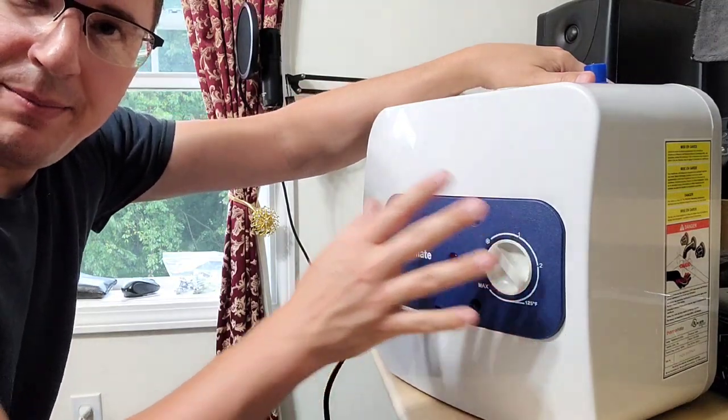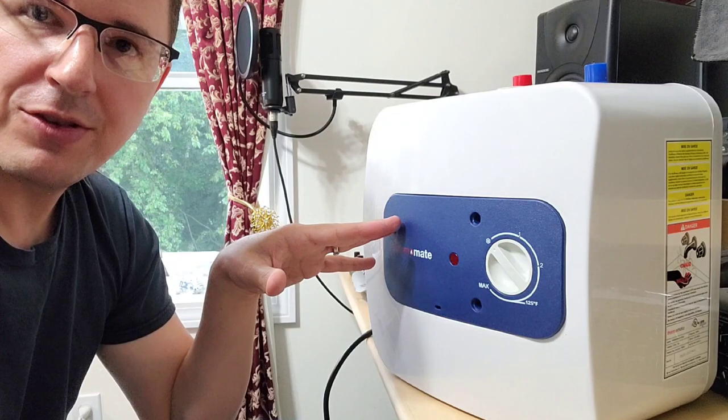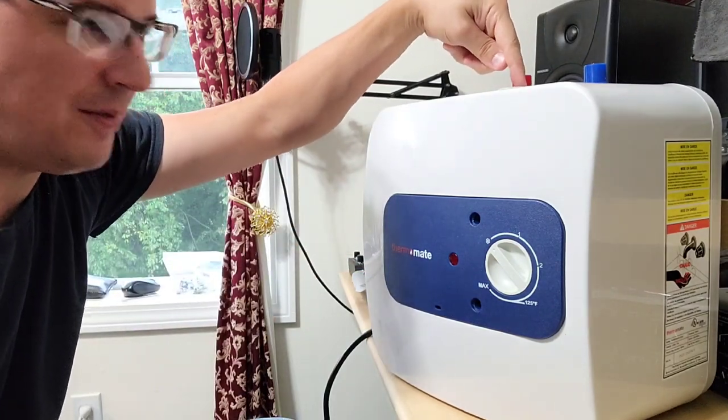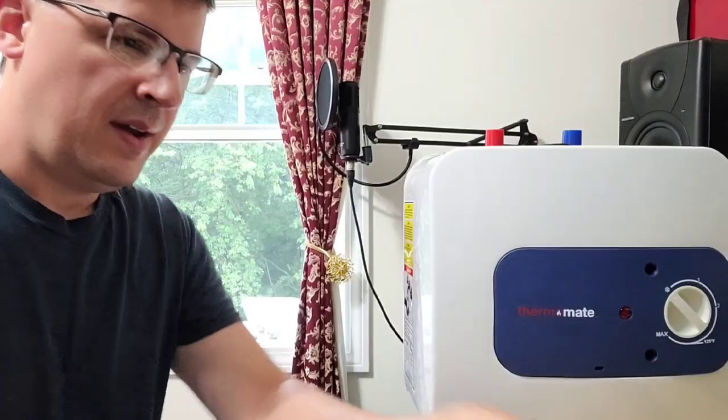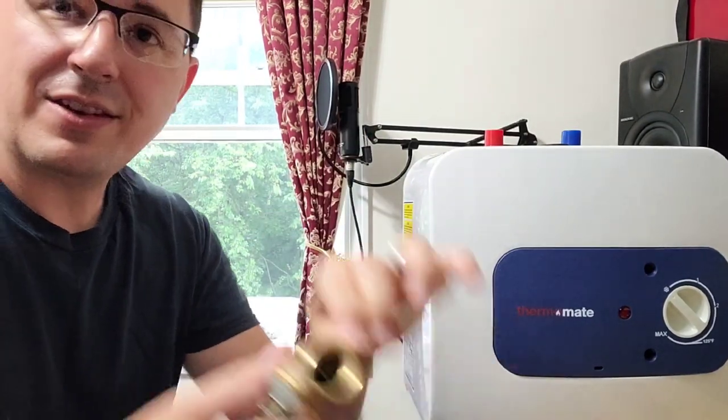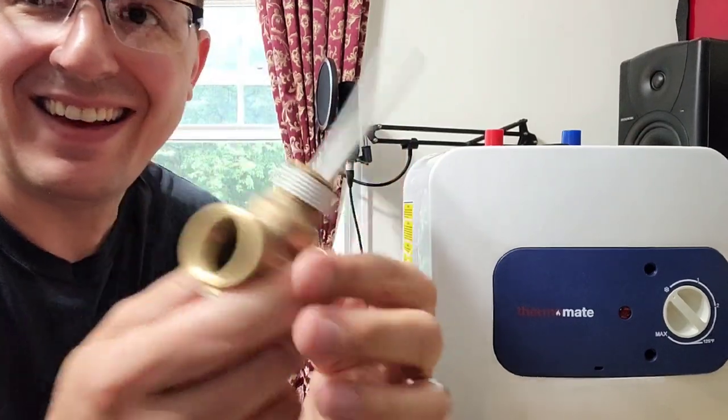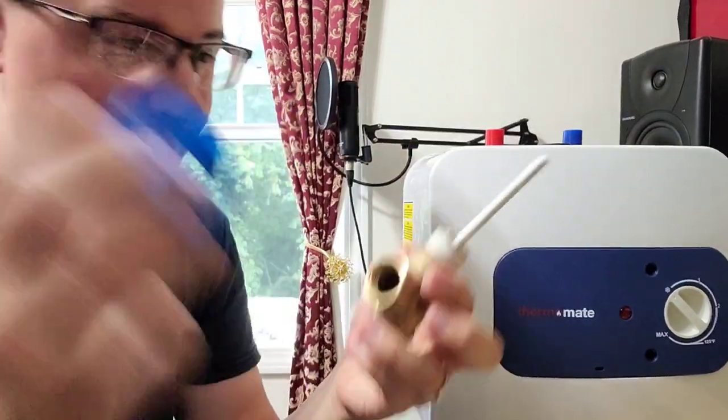Everything's put back together and what we're going to do now as pre-work before we install it is install that pressure relief valve. It does come with some teflon tape already on there, I'm just going to add a little bit more.